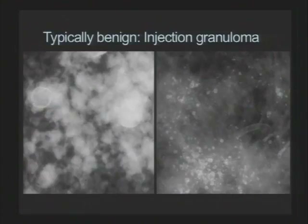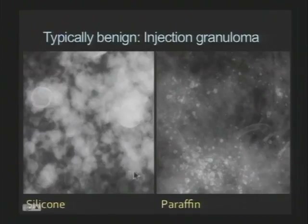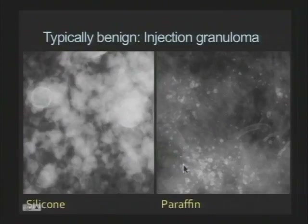Moving on to injections — there are many different types. Silicone injections on the left have a cotton candy, cloudy appearance. Paraffin injections, on the other hand, have loose and centered calcifications around them. Either way, benign.